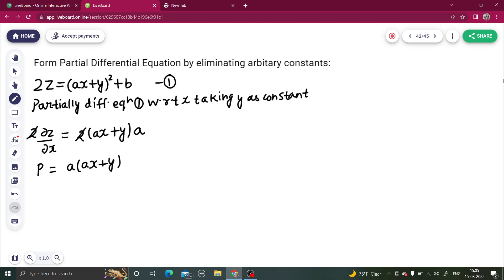So you are left with p equals to a times (ax + y), or p by a is equal to ax plus y. Let's name this as equation number two.